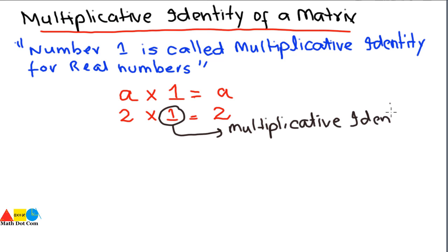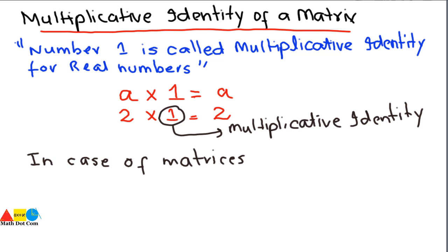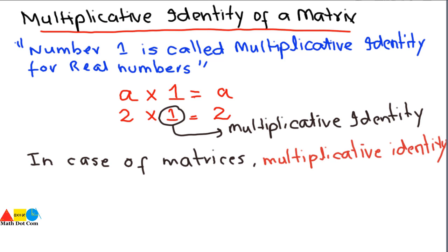One is the multiplicative identity in case of real numbers. But in case of matrices, we are dealing with multiple elements arranged in rows and columns. In that case, what would be the multiplicative identity? In case of matrices, the multiplicative identity one is replaced by the identity matrix.